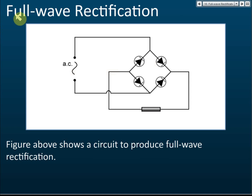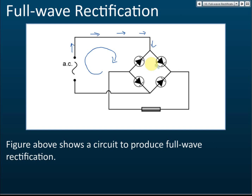Let's see what will happen to the currents when they pass through these four diodes. First, the alternating current supply is clockwise — the current flows up, goes to the right, then goes down. Now it comes to a junction where it can either go to the left or go to the right. It will go to the right, because going to the right is forward bias and going to the left is reverse bias.